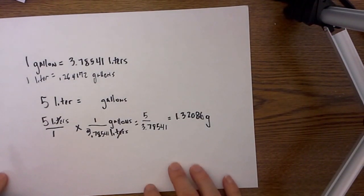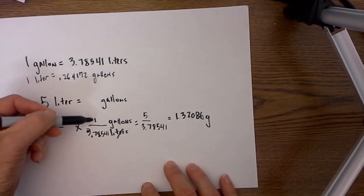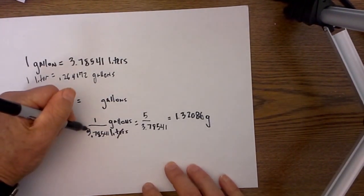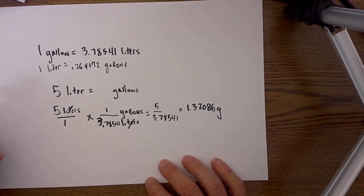So there is the first one. Again, I created a fraction, put liters on the top, placed it over 1, did a multiplication, placed a 1 by the larger unit, did my conversion. Let's look at another example of that.